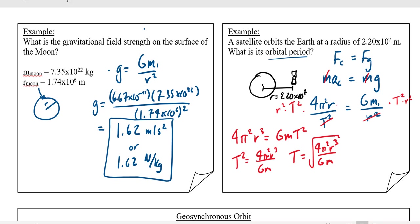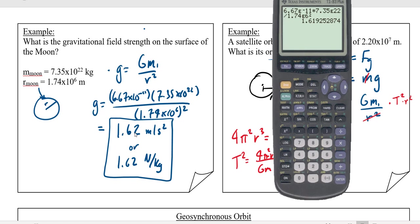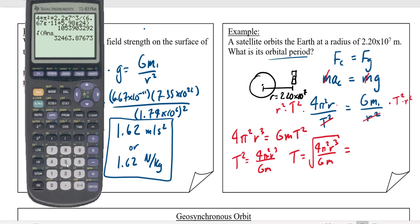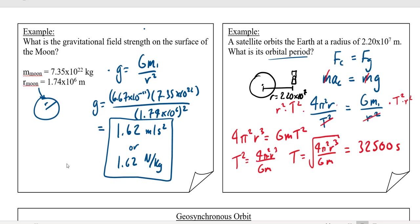Putting all the values into the calculator — and taking the square root of the whole thing — we get about 32,500 seconds as the orbital period.